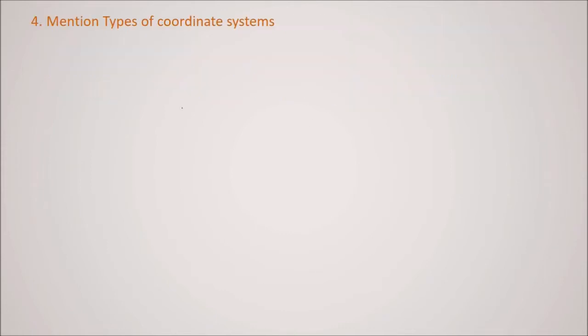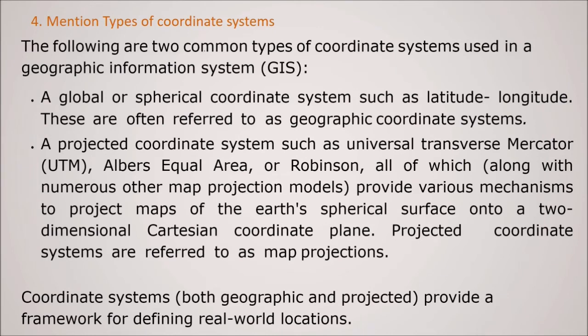Mentioning types of coordinate systems, so what kind of coordinate systems you can have. So these are the two common types of coordinate systems used in GIS. First is your global or spherical system such as latitude and longitude. These are often known as GCS coordinate systems, GCS, geographical coordinate system. And then the other is PCS, that is projected coordinate system, PCS, we call them as PCS.